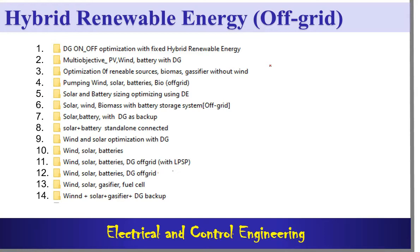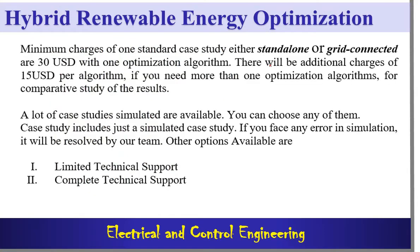We provide dedicated simulated case studies of microgrid systems that include hybrid renewable energy systems. Minimum charges for one standard case study — either stand-alone or grid-connected — are $30 with one optimization algorithm. There will be additional charges of $15 per algorithm if you need more than one optimization algorithm.